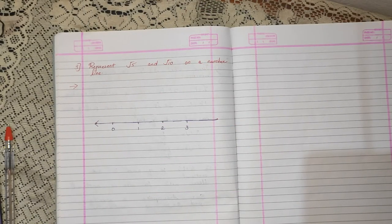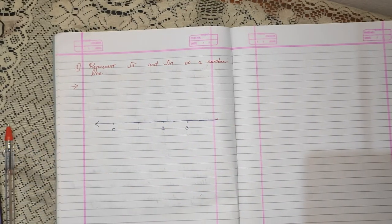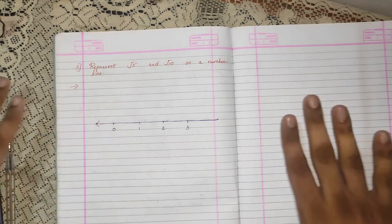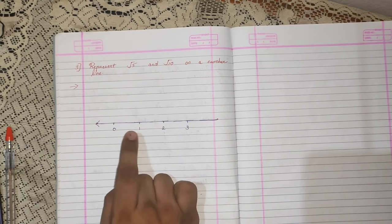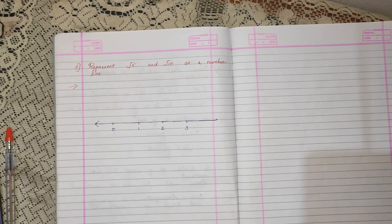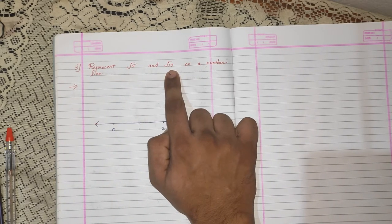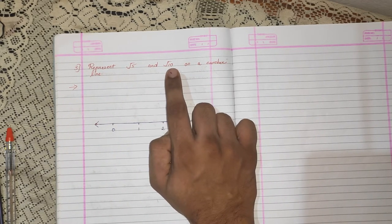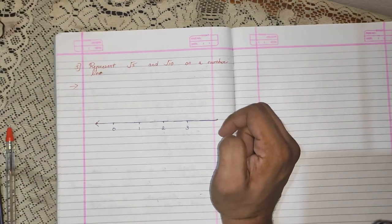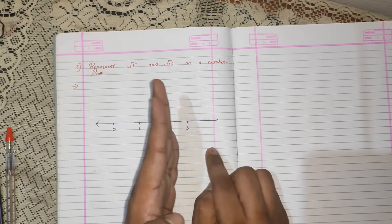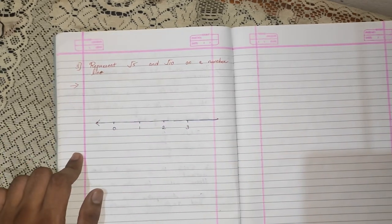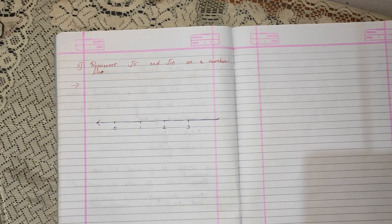Both root 5 and root 10 are irrational numbers and we have to represent them on a number line. Here as you can see, I have drawn a number line pointing 0, 1, 2, and 3. Why have I stopped at 3? Because root 10 is greater than root 9, and root 9 is equal to 3. Hence I stop at 3, knowing the value of root 10 will be a bit further from the number 3. So let us start.